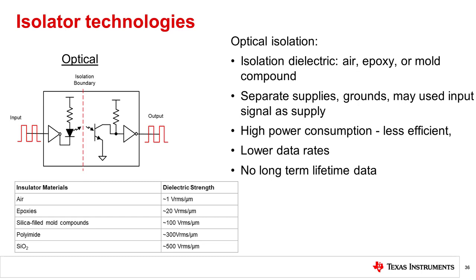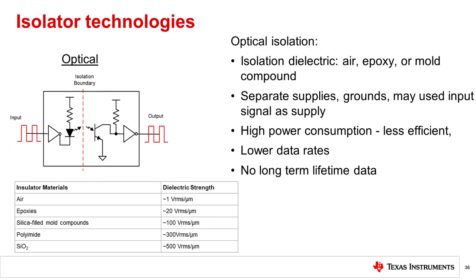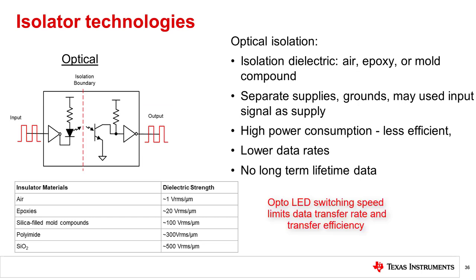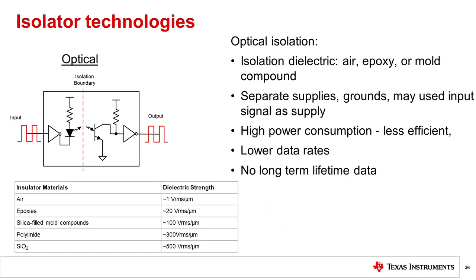Communication within an optocoupler occurs when an applied CMOS logic input generates an input side current, which then creates a proportional LED output for transmission through the mold compound barrier, and then to the receiving photodetector and output. Because optical isolation relies on light transfer, the communication rate of an optocoupler is typically less efficient than its capacitive or inductive counterparts. This is primarily because the rate of transfer is limited to the LED switching speed. As with all LEDs, use of the LED contributes to a weakened signal over time, creating a limitation to the long-term functionality of the communication.